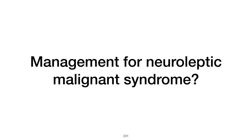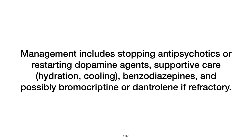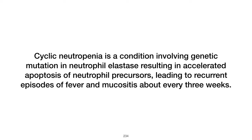Management for neuroleptic malignant syndrome involves stopping antipsychotics or restarting dopamine agents, supportive care, hydration, cooling, intensive care if needed, benzodiazepines, and potentially bromocriptine or dantrolene if symptoms are refractory. What is cyclic neutropenia? Cyclic neutropenia is characterized by a genetic mutation in neutrophil elastase resulting in accelerated apoptosis of neutrophil precursors, leading to cyclic increases in neutrophil counts alternating with severe neutropenia, correlating with recurrent episodes of fever and mucositis about every three weeks.